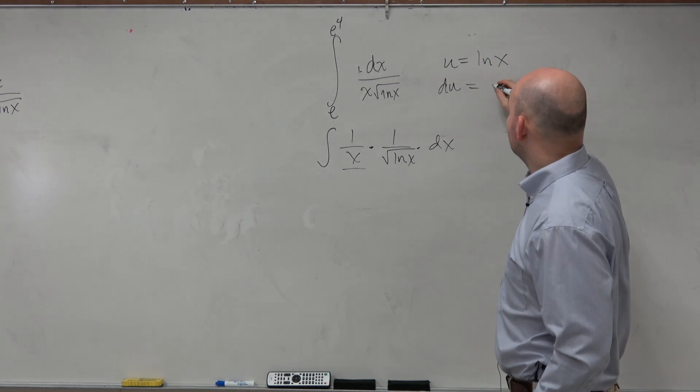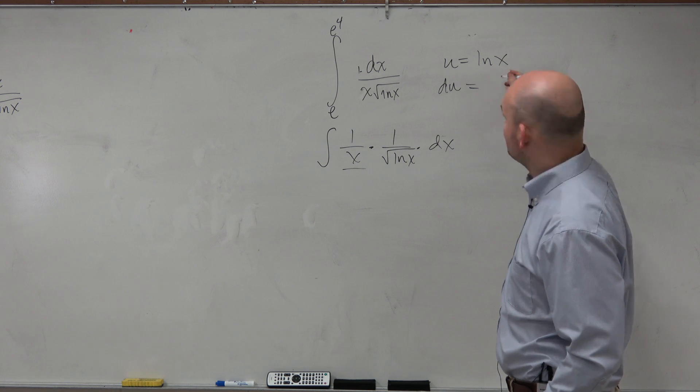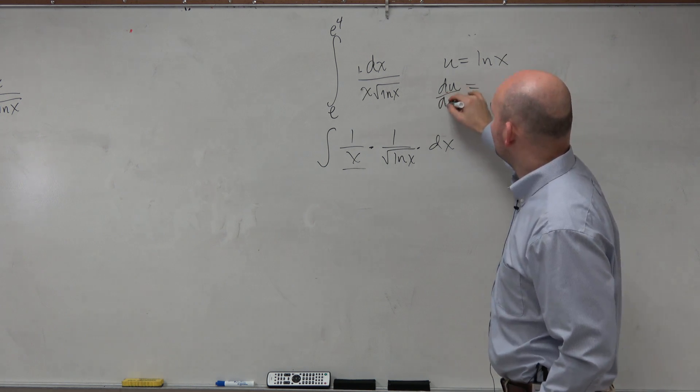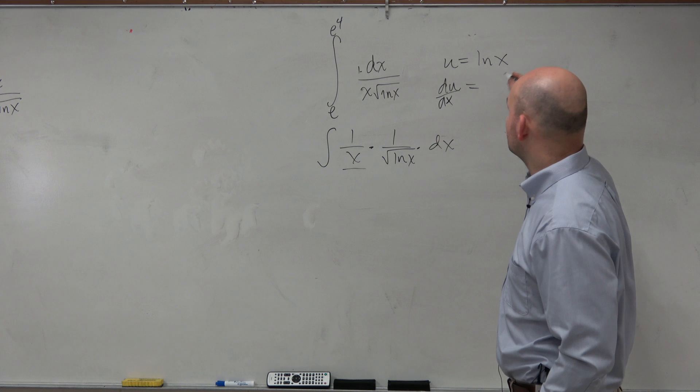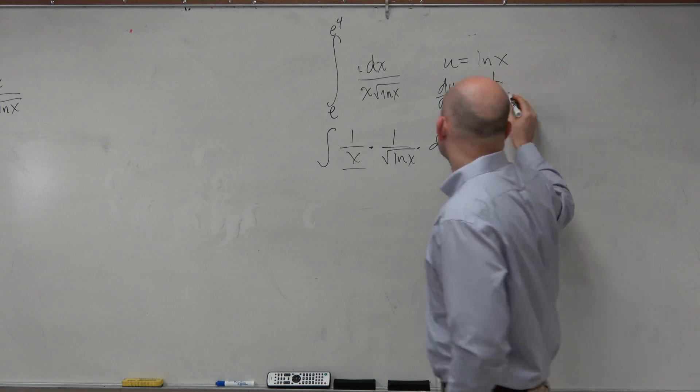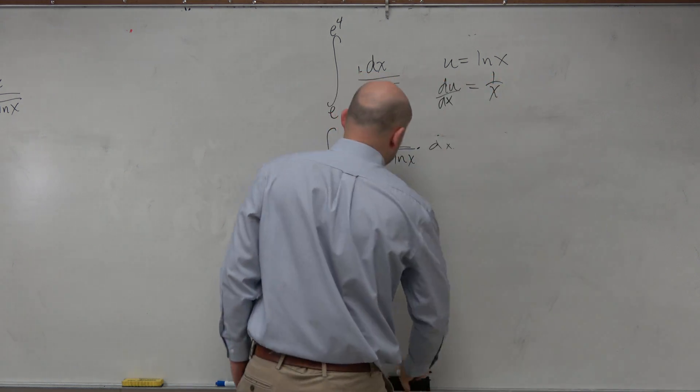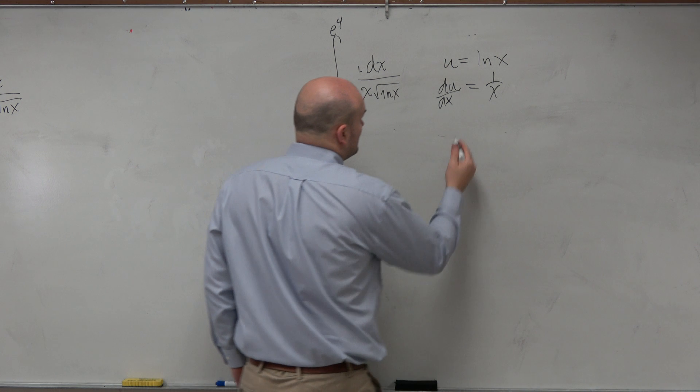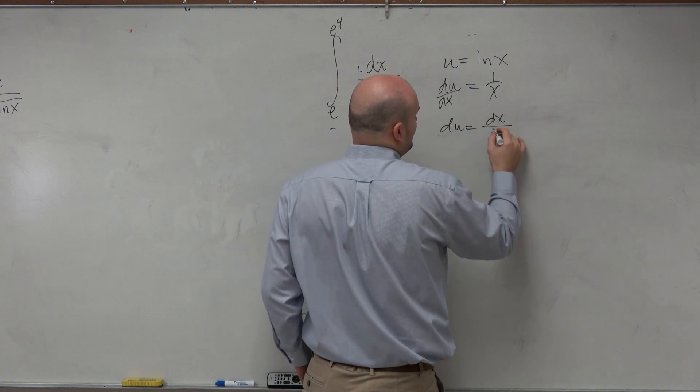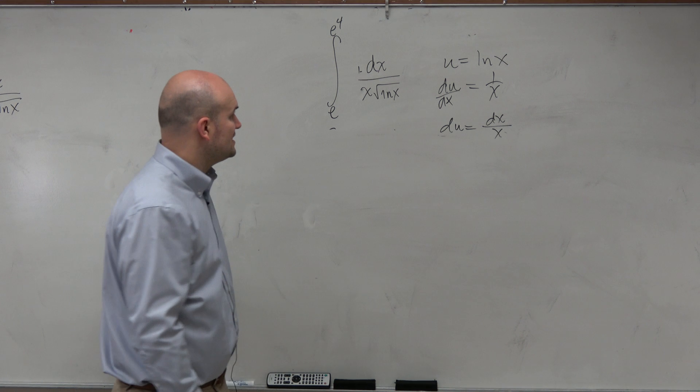OK? So anyways, when I get to this, I get derivative ln of x is going to be, so again, it's derivative d of u over d of x equals 1 over x. So what that gives me is du is equal to dx over x. I just multiplied the dx on both sides.